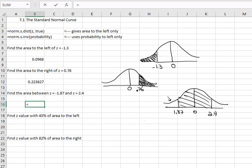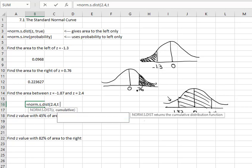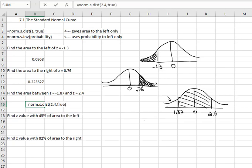In other words, we'll say equals norm.s.dist, open a parentheses, and we're going to use the 2.4, the one furthest to the right, comma true, and close the parentheses. And then I'm going to subtract, hit minus, what the normal distribution would give me to the left of negative 1.87, because that's all the white section I don't want. Norm.s.dist, negative 1.87, I didn't put the negative on my picture, I should have, comma true.